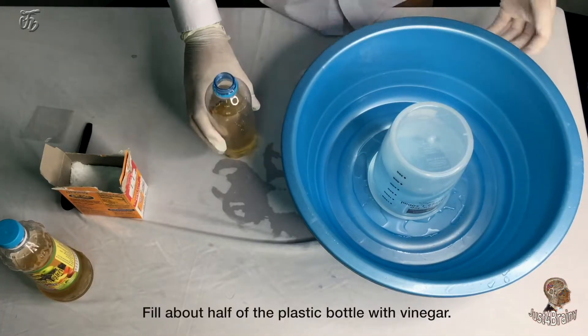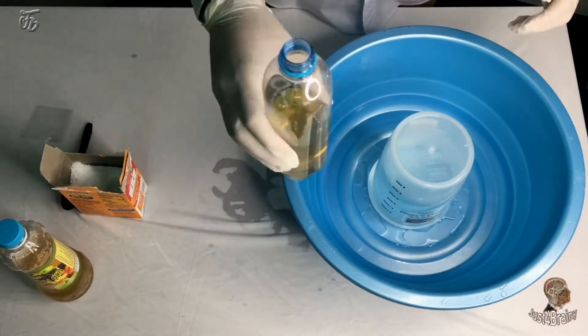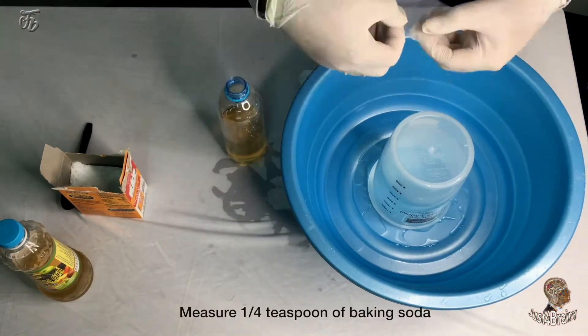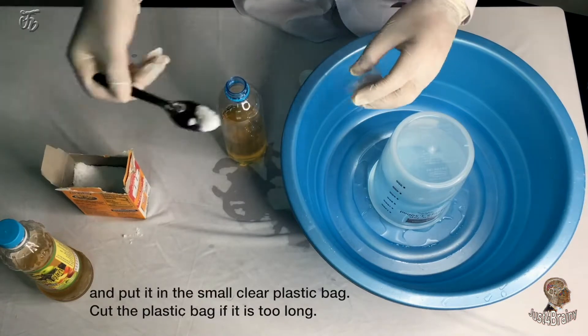Fill about half of the plastic bottle with vinegar. Measure 1/4 teaspoon of baking soda and put in the small clear plastic bag.